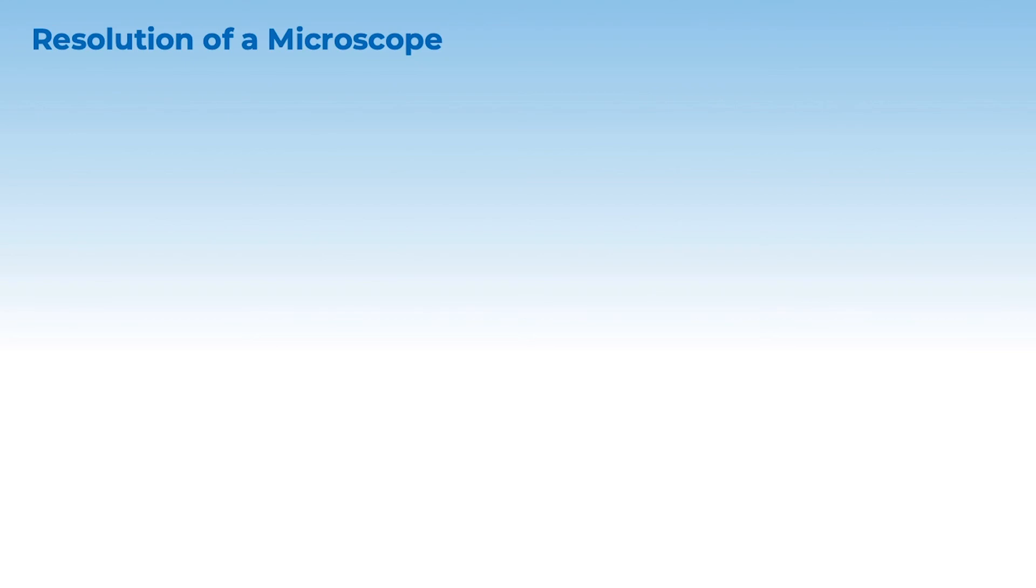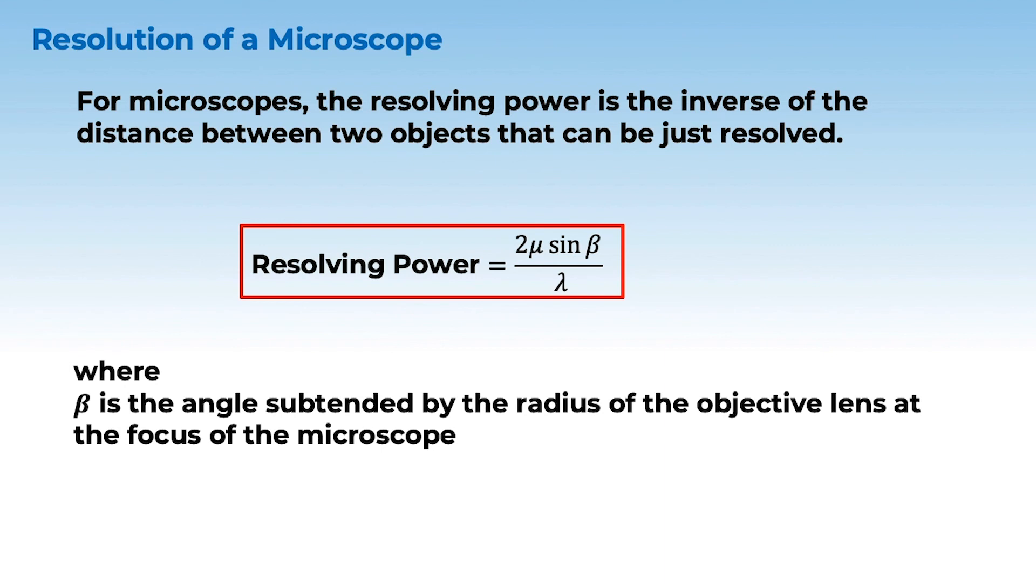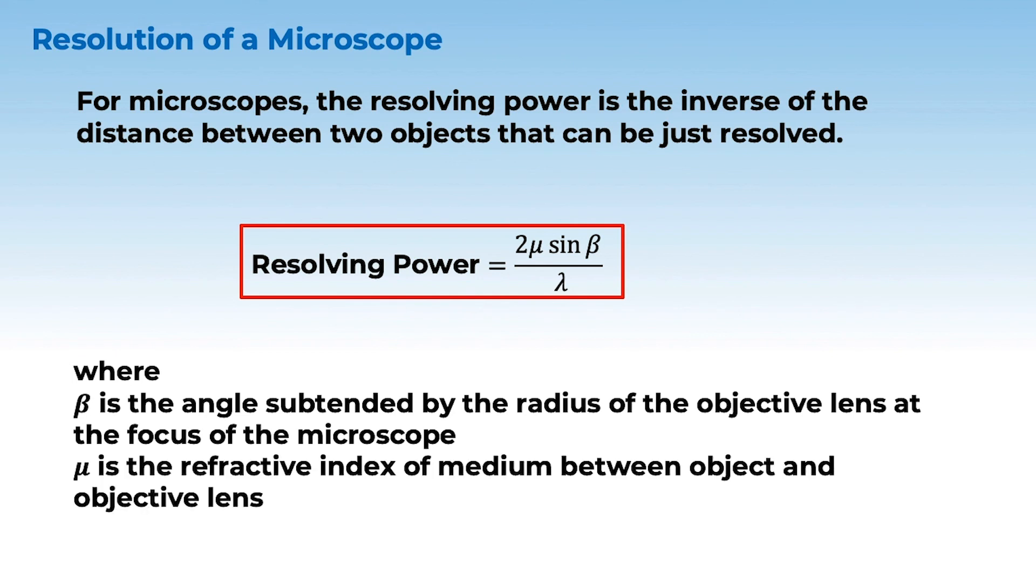Microscope resolution is slightly differently defined. So, the resolution or resolving power is the inverse of the two objects' distance when it is just resolved. So, this definition is 2 mu sin beta by lambda. Here, beta is the angle subtended by the radius. The objective lens' radius at the focus is the angle subtended. That angle is beta. And mu is the refractive index of the medium.